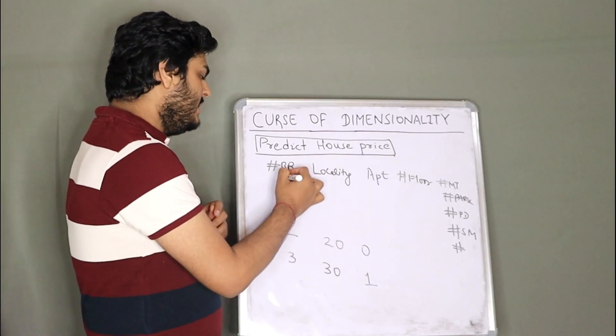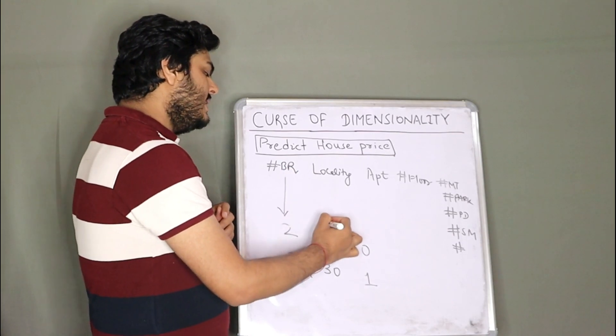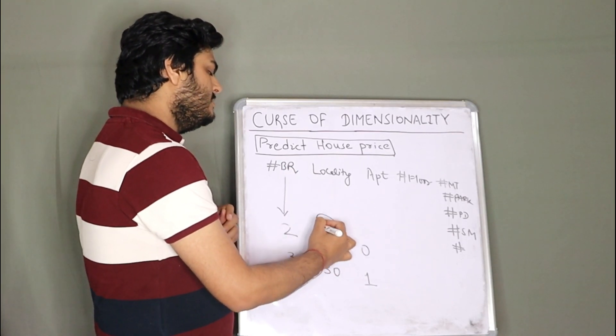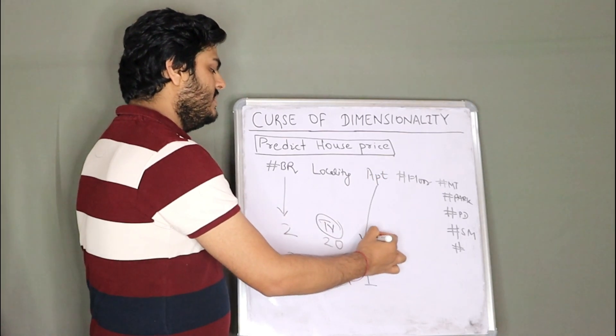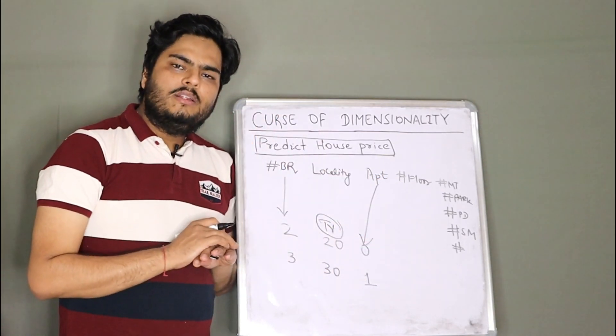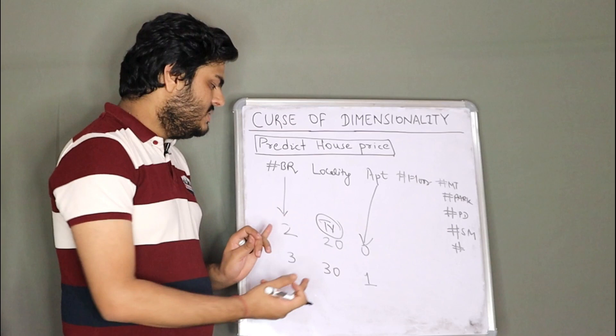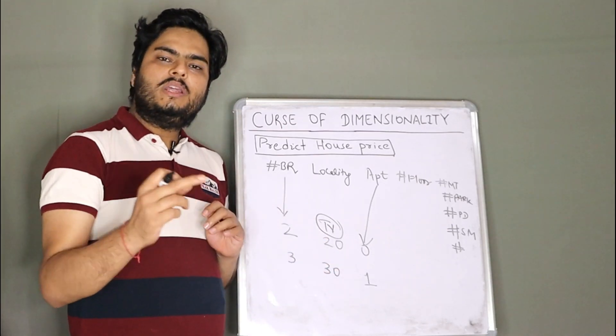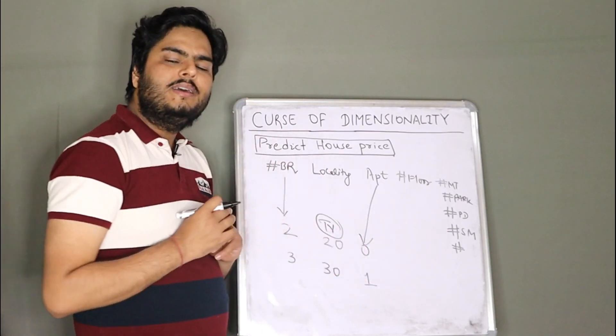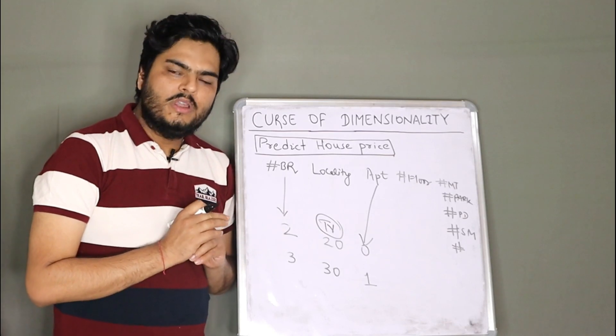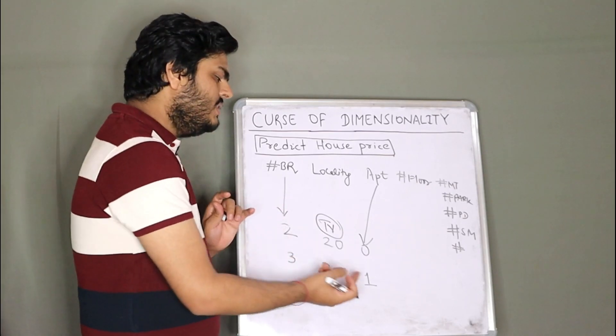So this is your number of bedrooms. This is your target variable, which is nothing but house price. And this is your apartment feature. Here, the learning can be very simple using these two only. But if I add one more feature here, it is not much useful. I am giving you simple example with one, two features.